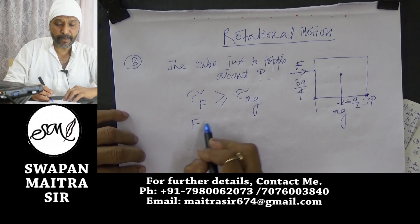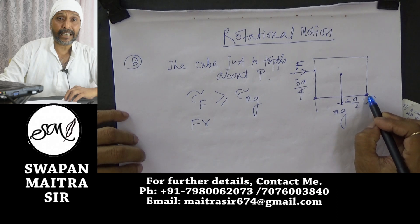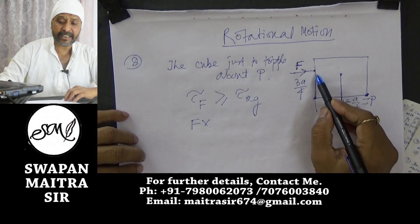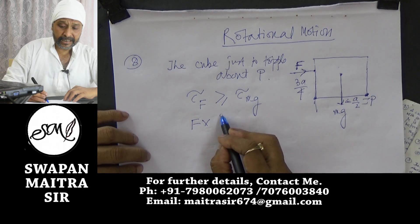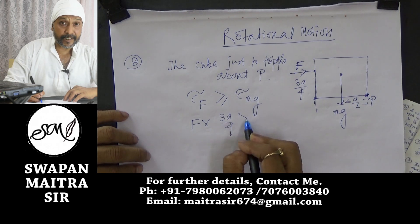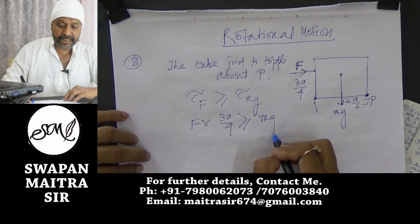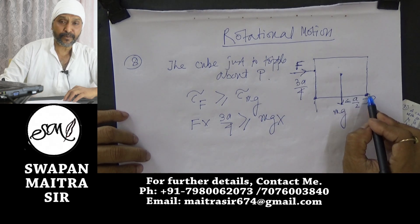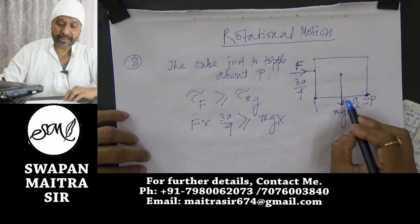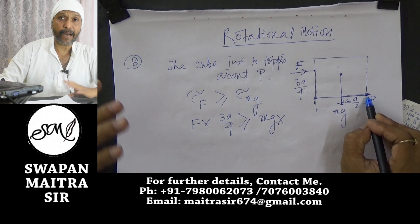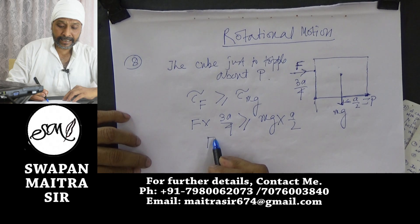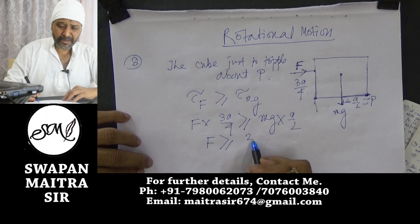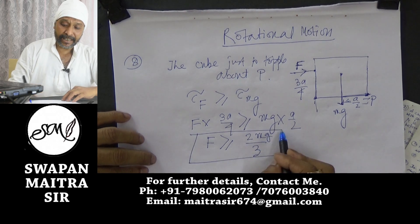The torque by F about P equals force F into perpendicular distance, which is 3A/4. This must be greater than or equal to Mg into perpendicular distance A/2 about P. So F × 3A/4 ≥ Mg × A/2, giving F ≥ 2Mg/3.